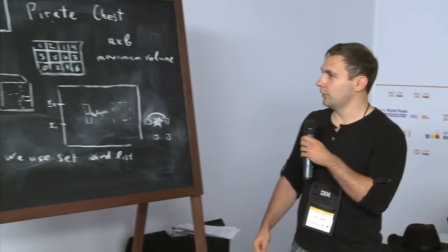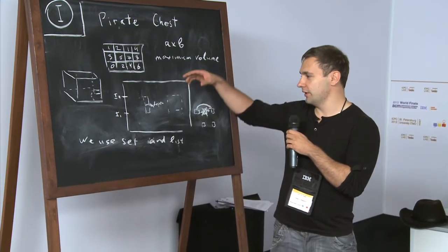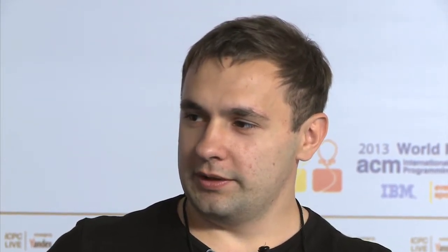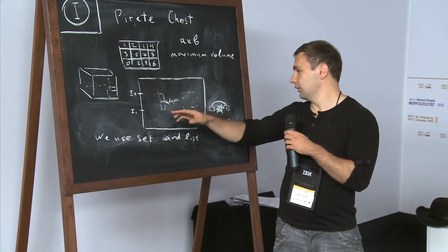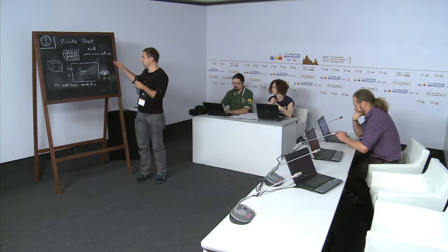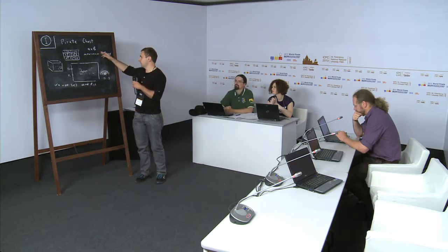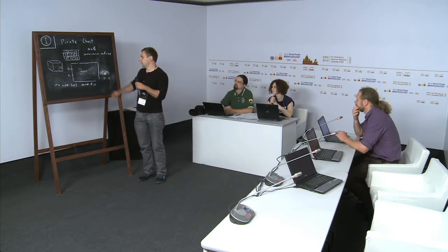This problem is called Pirate Chest and it was about putting a pirate chest with treasures into the water. So water was like a lake with different depths. The bottom of this lake had different heights. And we wanted to put the chest with maximum volume, but we have restriction on its vertical fraction. So it can be no more than A multiplied by B.